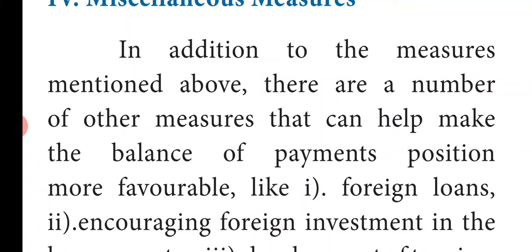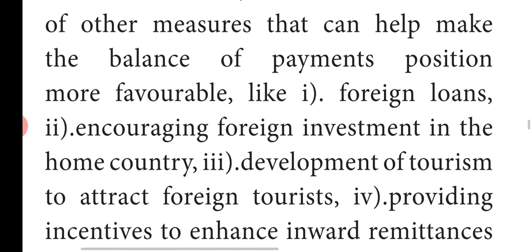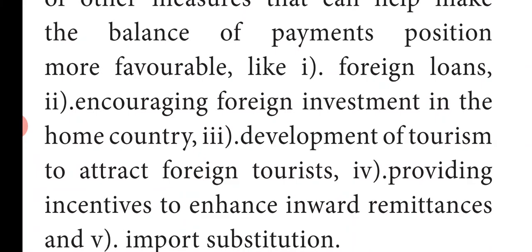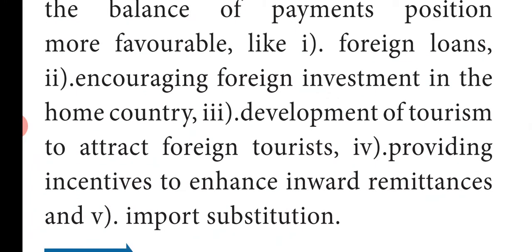In addition to the measures mentioned above, there are a number of other miscellaneous measures that can help make the balance of payment position more favorable. These include: obtaining foreign loans, increasing foreign investment in the home country, development of tourism to attract foreign tourists, providing incentives to enhance foreign remittances, and import substitution — producing domestically what would otherwise be imported.